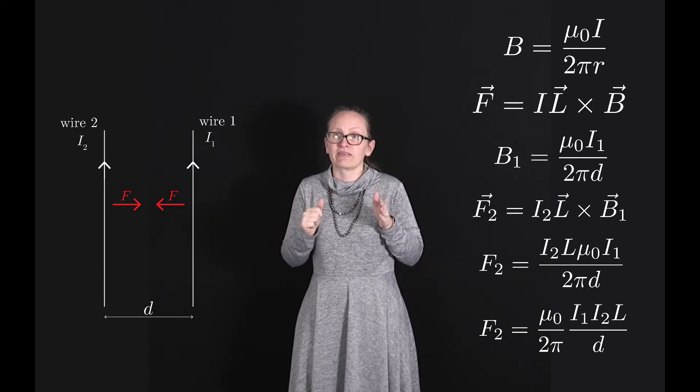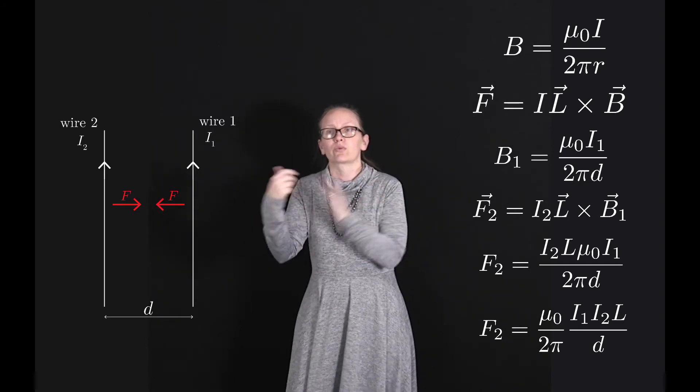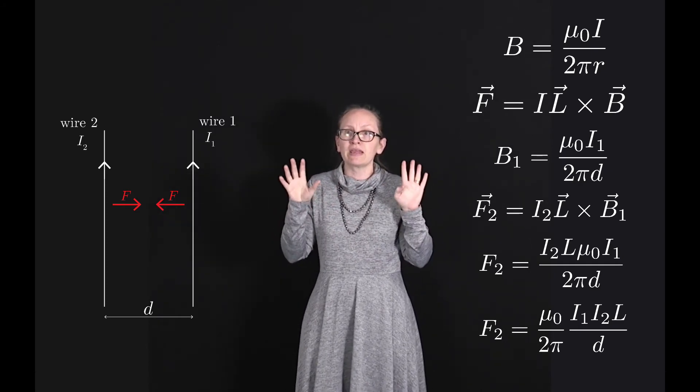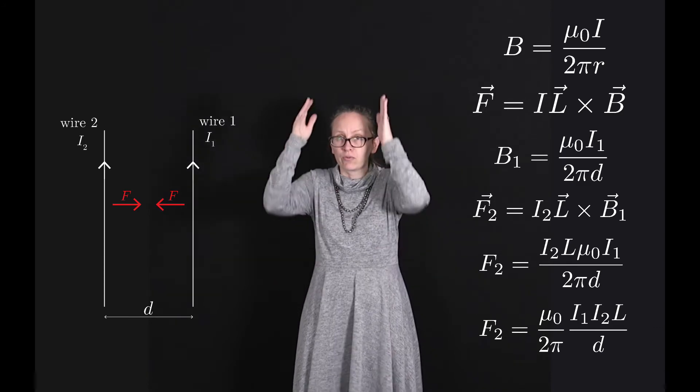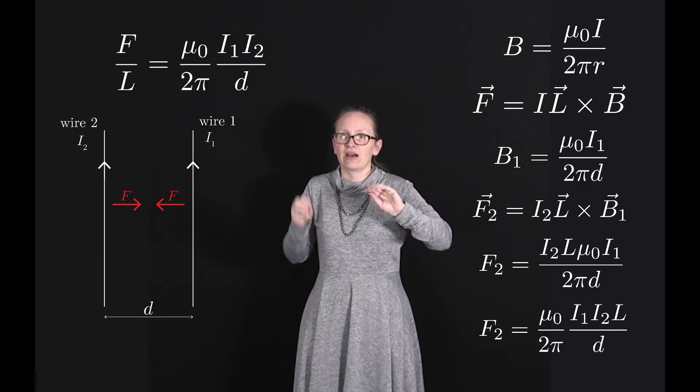However when we look at the direction in this case, the direction is back towards wire 2. So when we have two parallel wires, we can say that the force per unit length F over L equals